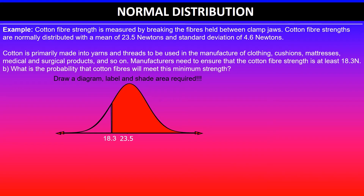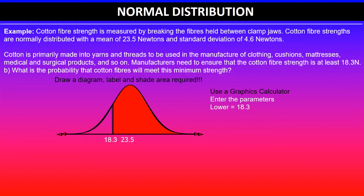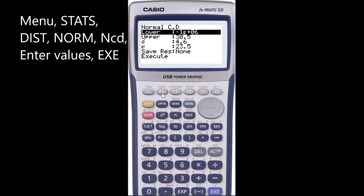That's the shaded area we're after. We'll use the graphics calculator and enter the values given. The lower value is 18.3 because that's the minimum; the upper value is positive infinity. The standard deviation is 4.6 and the mean is 23.5. This gives a probability of 0.8709.